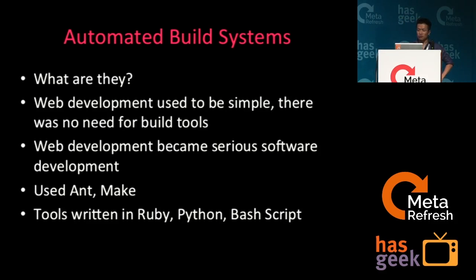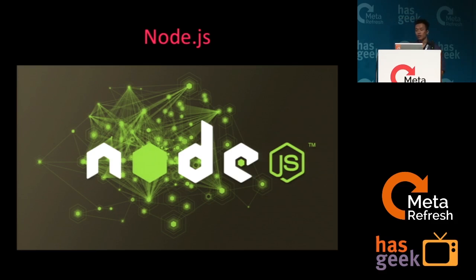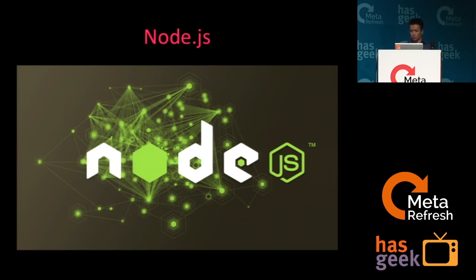And something happened in 2009 — Node.js was created. It gave JavaScript system-level access. Now you could write tools that were previously written in Java, Python, Ruby, or any other general-purpose programming language. A JavaScript developer could now do system-level programming as well.